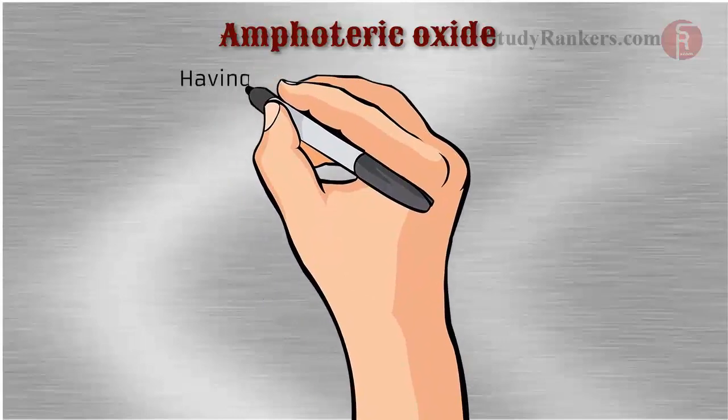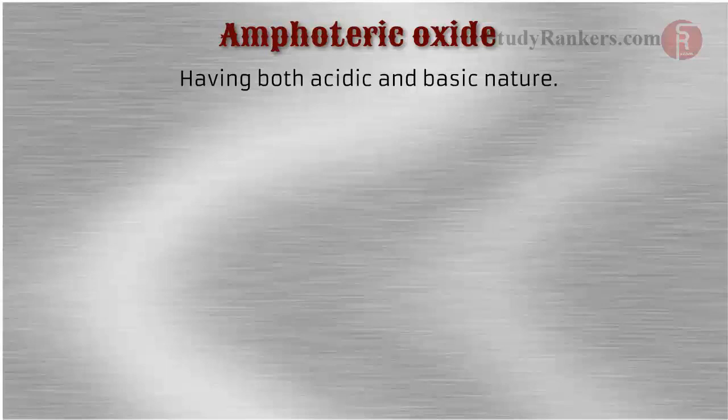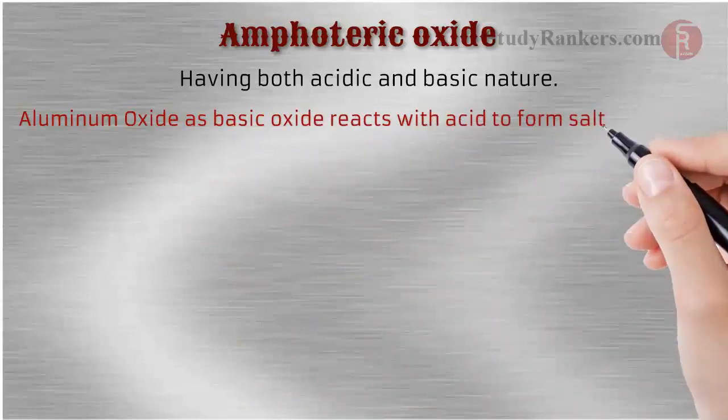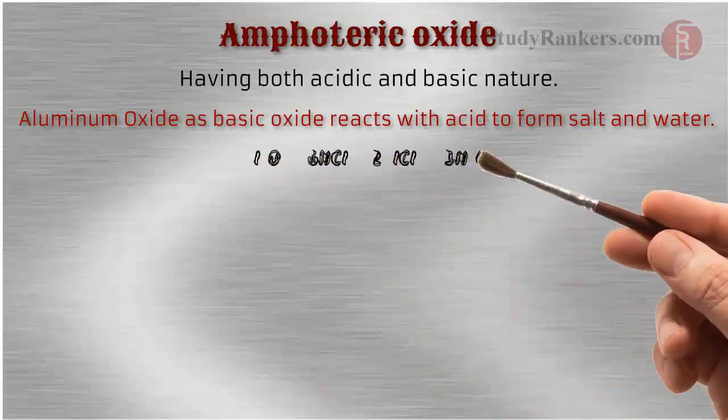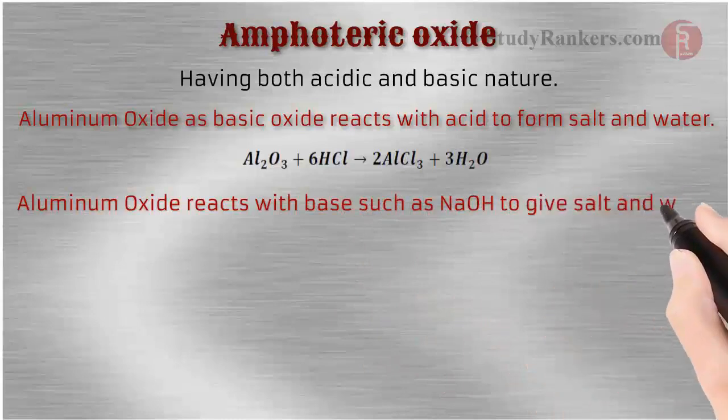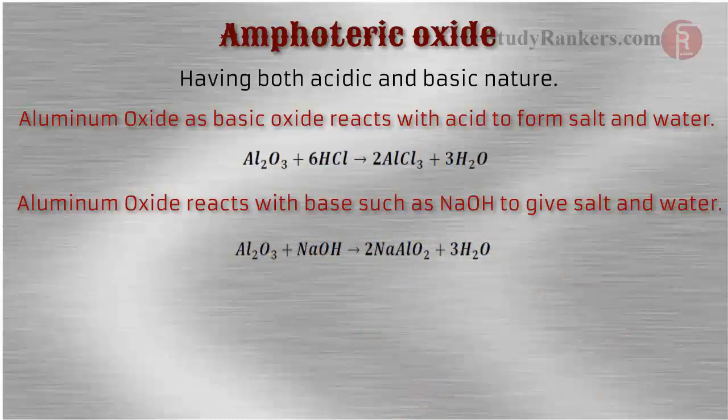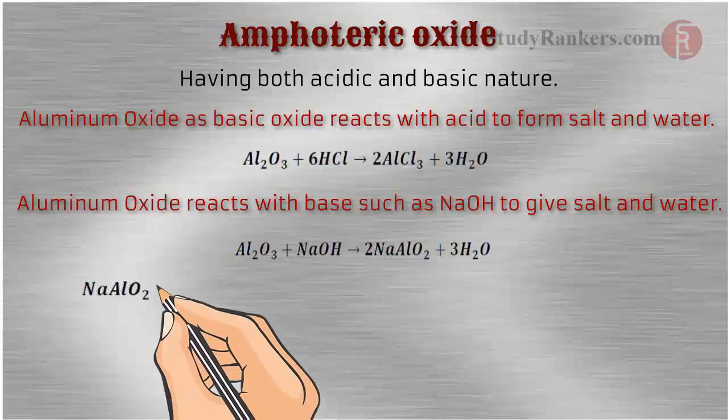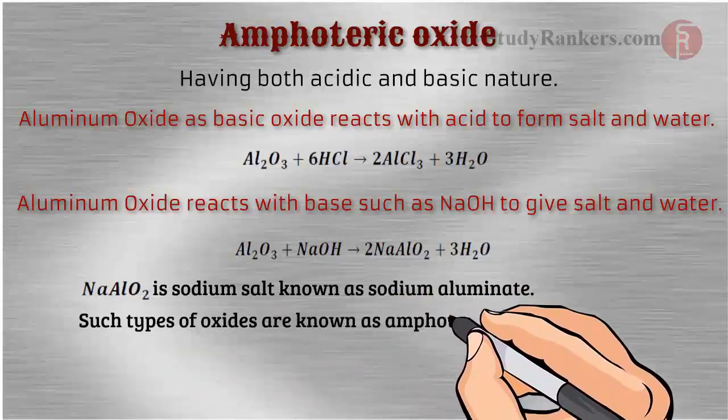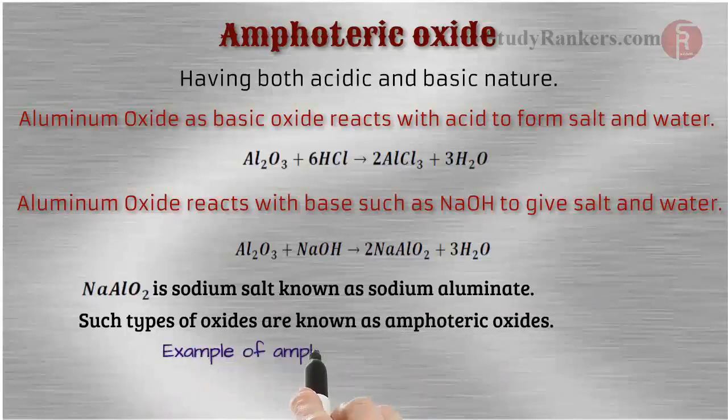There is an interesting thing about aluminum oxide: it has both acidic and basic nature. Aluminum oxide as basic oxide reacts with acid to form salt and water. Here is an equation: When Al2O3 reacts with HCl, then it will give 2AlCl3 plus 3H2O. Aluminum oxide reacts with base such as NaOH to give salt and water. When Al2O3 reacts with NaOH, then it will give 2NaAlO2 plus H2O. NaAlO2 is sodium salt known as sodium aluminate. Such types of oxides are known as amphoteric oxides. Zinc oxide is another example of amphoteric oxide.